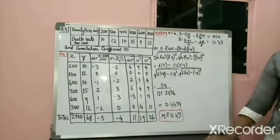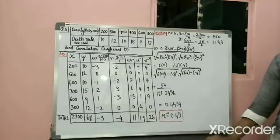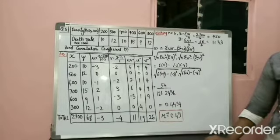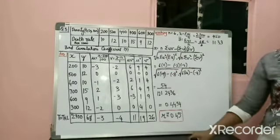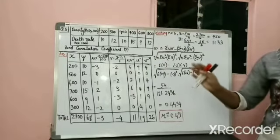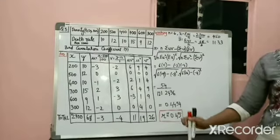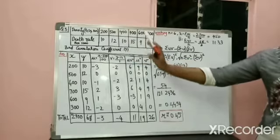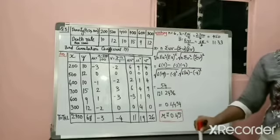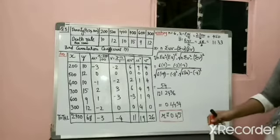Now let us take another example — question number 3. The question says: for 6 different cities of Gujarat state, the approximate figures regarding their density of population per square kilometer and the death rate per thousand are given below. I am reading this question because there was no space on the board, so I have written only the data. You have to find out the correlation between the density of population and the death rate.